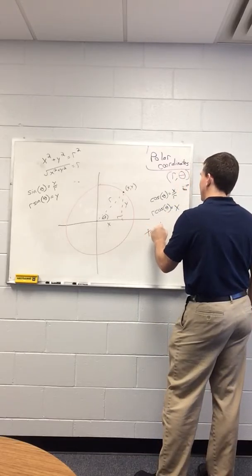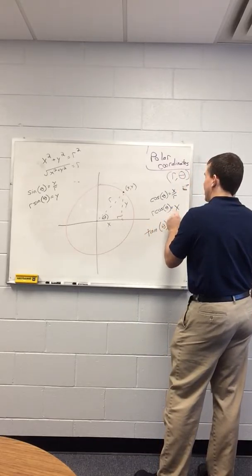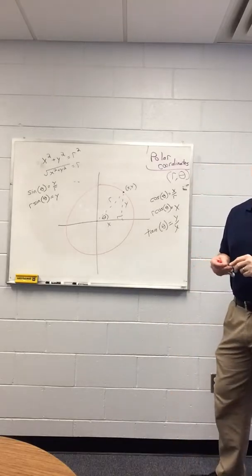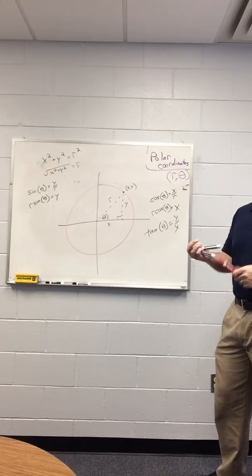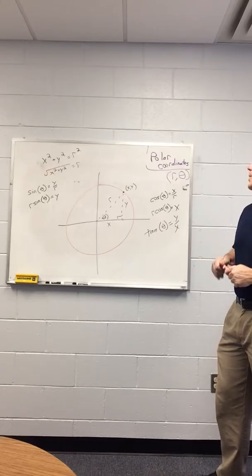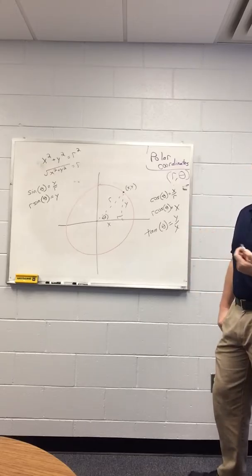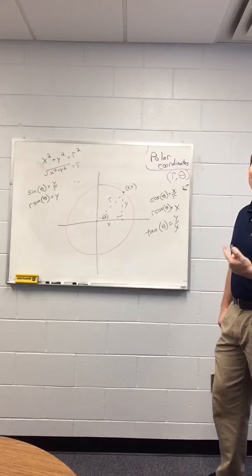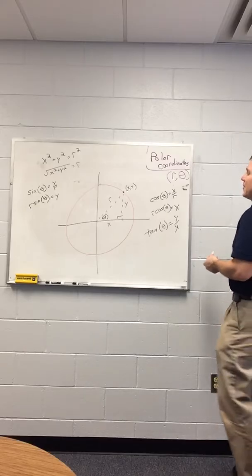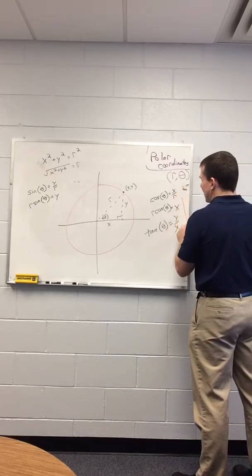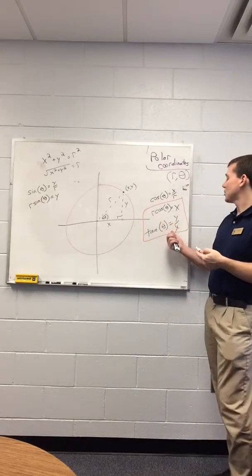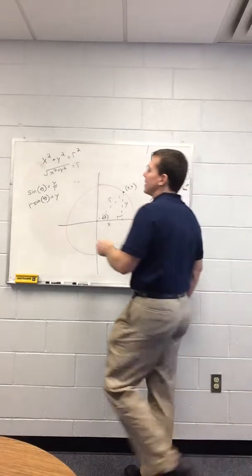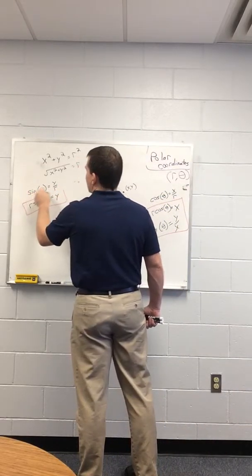And then lastly, I suppose, if we want to just relate the angles, we can use any of the trig we want. But if I know x and y and theta, then I can also say tan theta equals y over x, opposite over adjacent. And again, all of these are just the definitions we already know from the trig we've done. We're just rewriting them like we did at the beginning of the semester in terms of x and y and using this r for my radius.